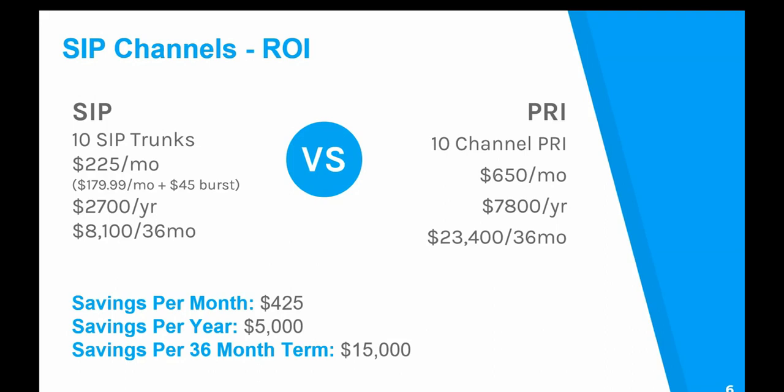So $650 a month over a three year contract equates to $7,800 a year, which equates to $23,400 over three years. Now let's look at the cost for a SIP trunk instead. A three year SIP trunk contract with Clearly IP for 10 channels would be $17.99 a channel, or $179.99 a month versus that PRI T1 of $650 per month. The beauty with SIP trunking and the Clearly IP platform is that you buy the 10 channels you need at $179 per month.